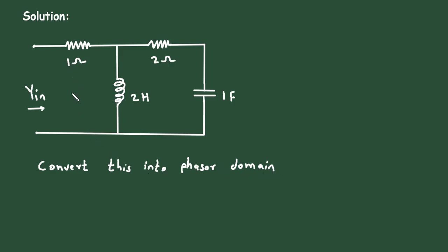Now here, this is resistance. So 1 ohm resistance will remain same, 1 ohm resistance. And now this is 2 henry inductance, so it will be j omega L.